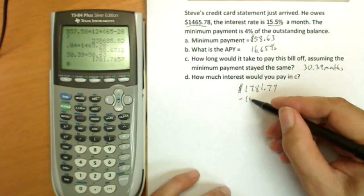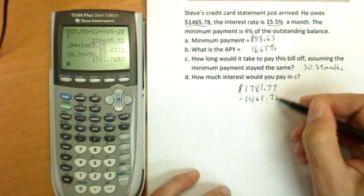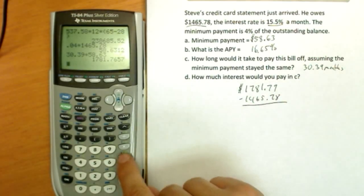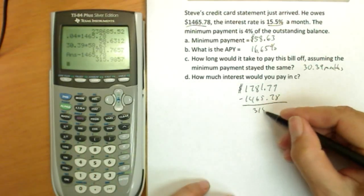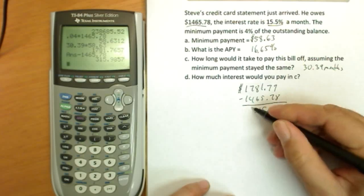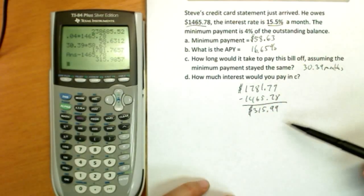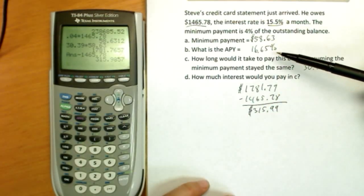And that compared to the original debt of $1,465.78, we can see that what's happened is we spent a lot of interest by keeping this balance: $315.99 worth of interest by paying this thing off slowly the way the credit card wants you to do it, since that way they can make more money.